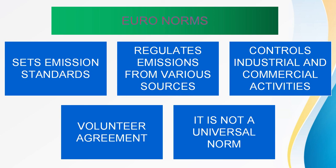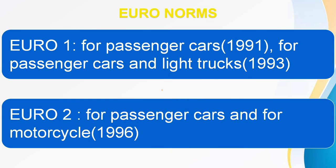Euronorm is a voluntary agreement between the European Union and auto manufacturers. It is not a universal norm, but it sets emission standards to reduce air pollution. It regulates emissions from various sources and controls industrial and commercial activities to check air pollution. There are stages: Euro 1, Euro 2, Euro 3, Euro 4, and Euro 5 fuels for light duty vehicle standards. Euro 1 is for passenger cars and light trucks; Euro 2 is for passenger cars and motorcycles.